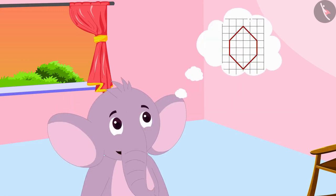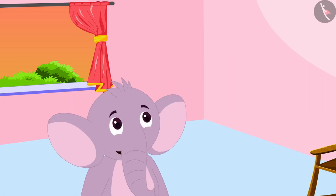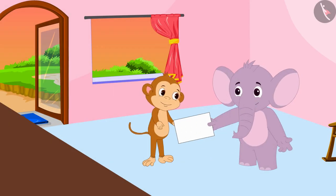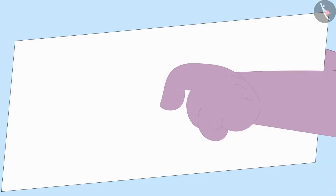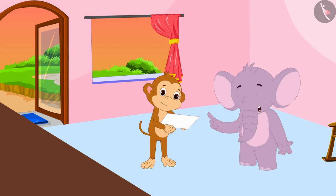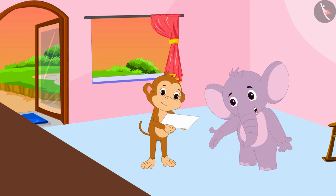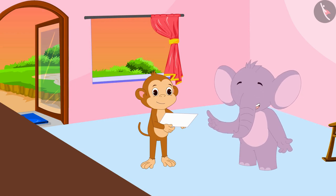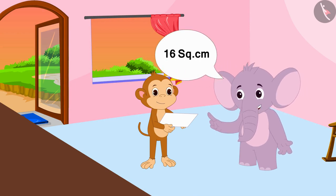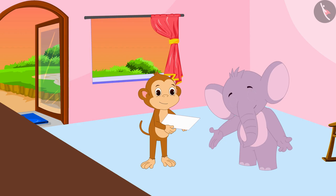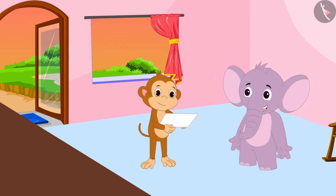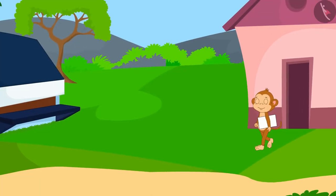Now Appu wants to change the shape of these boxes. Appu has chosen a design for the new boxes. Babban, I have drawn the design of my new box on this paper. The area of this box is the same as the area of my old box — 16 square centimeters. You must first show me a sample of these new boxes. If I like the sample, I will award you the order to make these boxes.